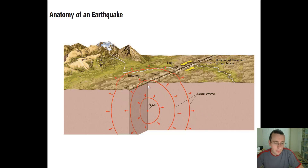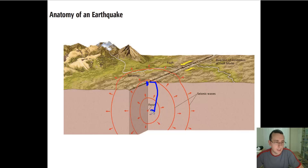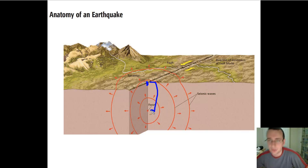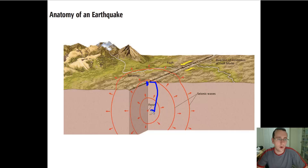The seismic waves will stretch from the hypocenter and eventually hit the surface. The point on the surface right above the hypocenter is referred to as the epicenter. We refer to the depth of the earthquake as the distance between the epicenter and the hypocenter or focus. To find the epicenter, scientists use things like shadow zones, lag times, and triangulation to locate the seismic origin.